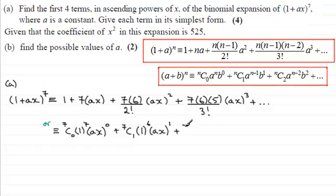Third term is ⁷C₂. Then it would be 1 to the power 5, and then (ax) to the power 2. Again, 5 and 2 adding to 7. The fourth term will be ⁷C₃, and then it would be 1 to the power 4, and then (ax) all cubed. And again, don't forget to put plus and so on. So whichever one of these that you work with, you should end up with exactly the same answer.